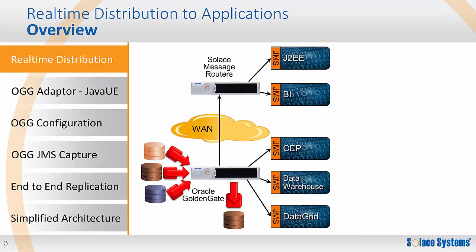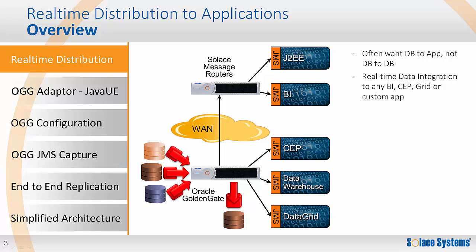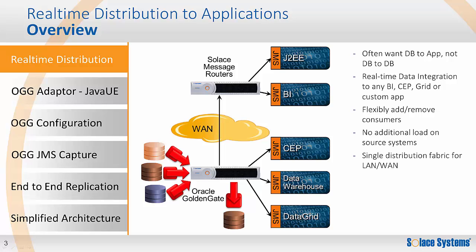What makes the GoldenGate integration with SOLUS most interesting is all the opportunities it unlocks. Database-to-database transfer is still supported over SOLUS, but once the database events are on SOLUS message routers, they can be delivered to a whole new set of applications, like complex events processors, data grids, or business intelligence applications. The flexibility of the SOLUS message routers lets you easily add or remove consumers without affecting the source systems, giving you a single distribution fabric for the whole enterprise with a detailed view that is always up to date.